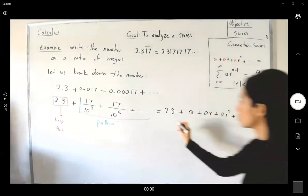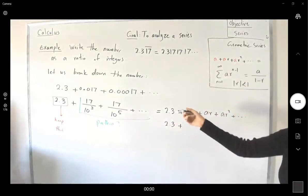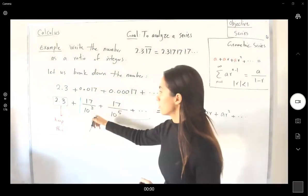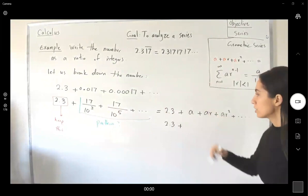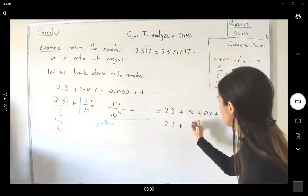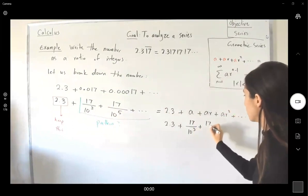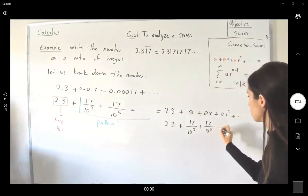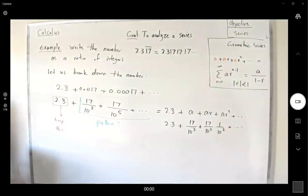This is 2.3 plus your a is 17 divided by 10 to the third. And your r is going to be just 1 over 100. So this is 17 over 10 to the third plus 17, 10 to the third times 1 over 10 squared.